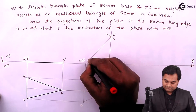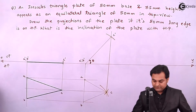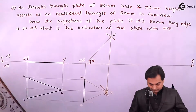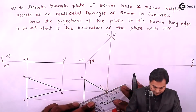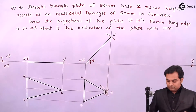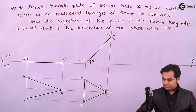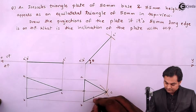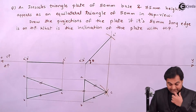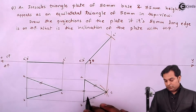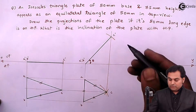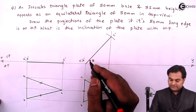This inclination I'll call theta. Now I'll make it dark. Here is the equilateral triangle in which all sides are equal, and this was the isosceles triangle where these two sides are equal. This is the top view of the isosceles triangle in which point C has been lifted keeping A and B fixed, and this is the front view which appears as an inclined line.